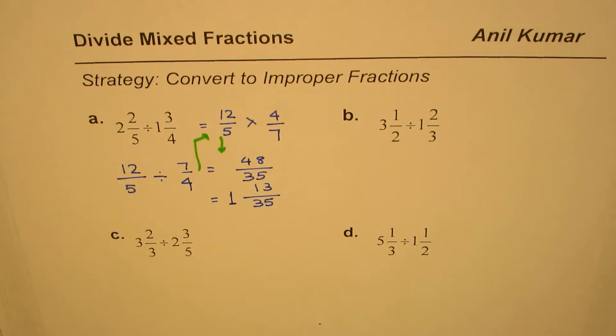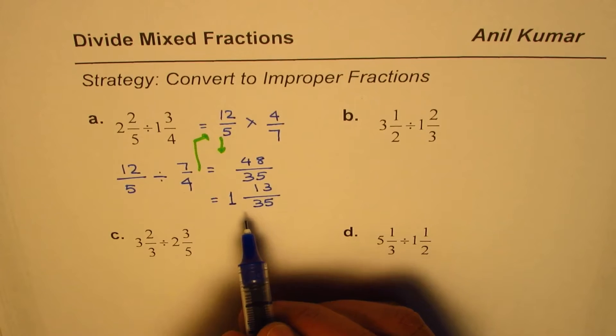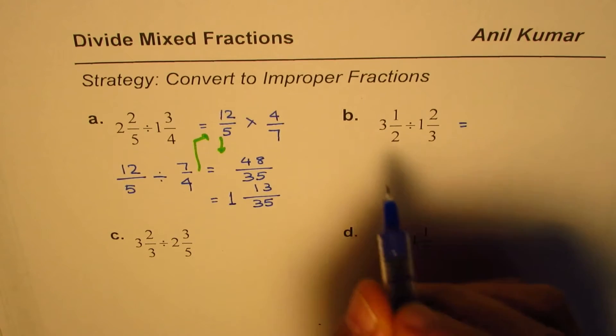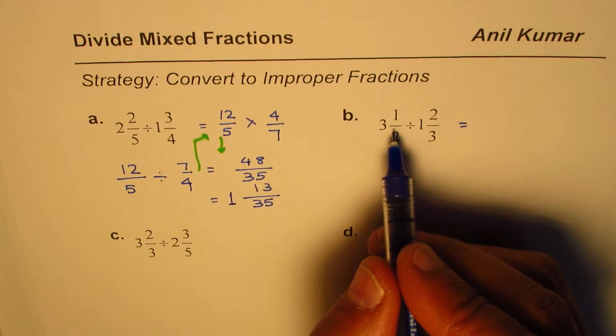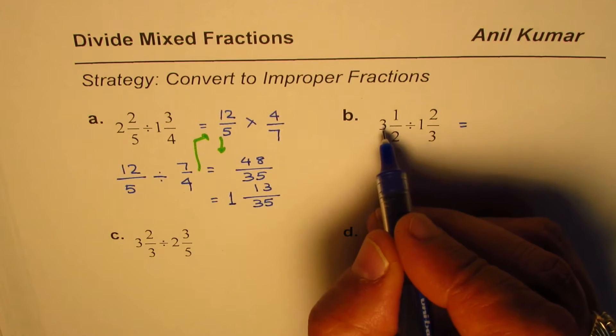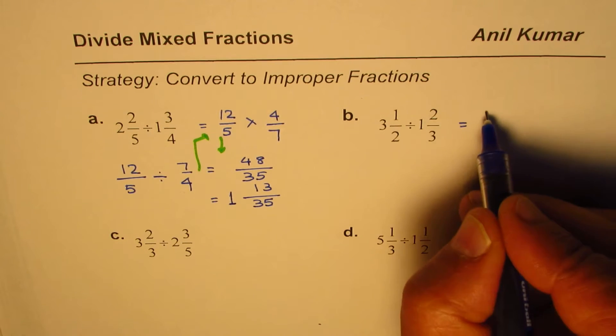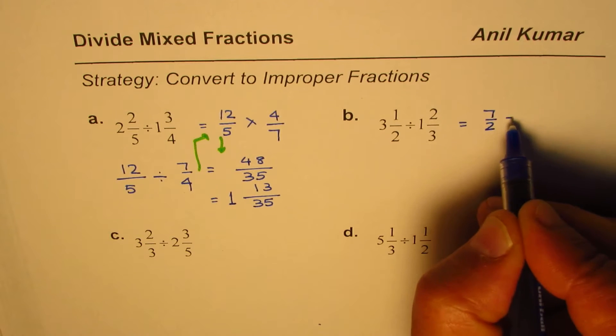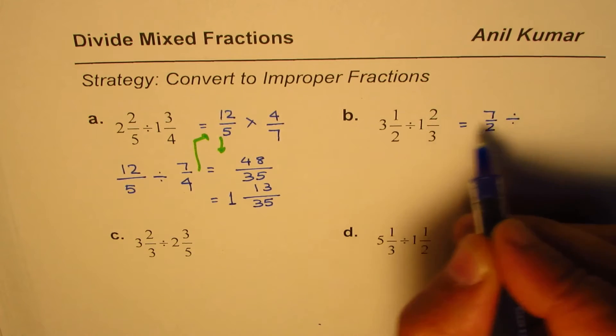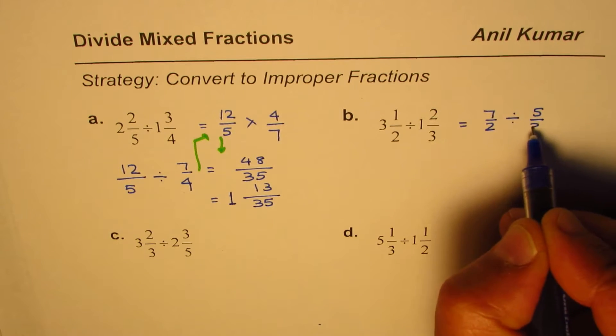I hope the steps are clear. Let me do one more for you. The first step here is to rewrite as improper fractions. 3 and 1/2 could be written as 3 times 2 is 6, plus 1 is 7—7/2 divided by—3 plus 2 is 5—5/3.